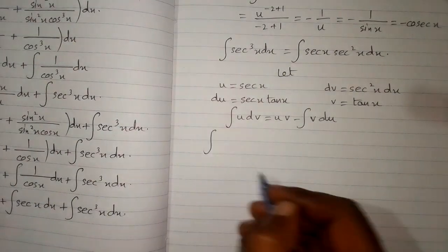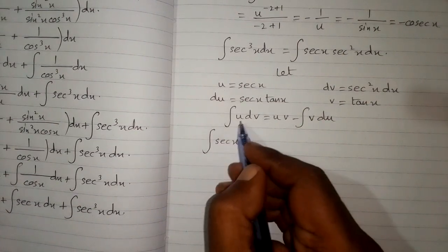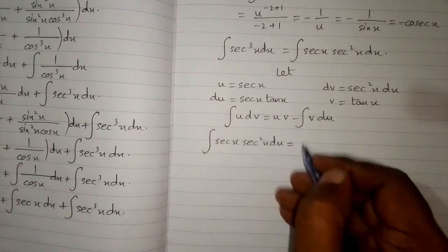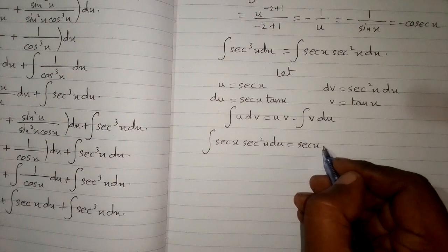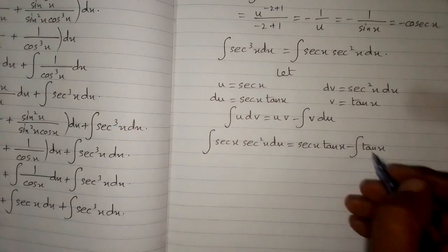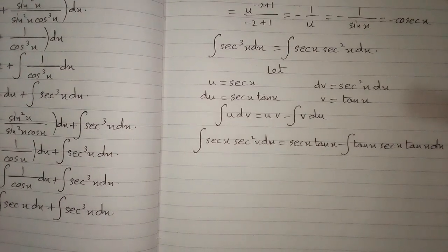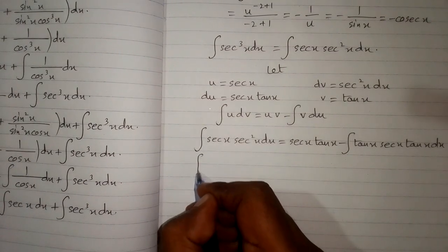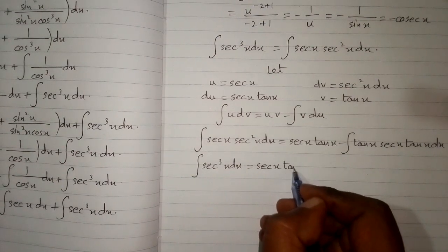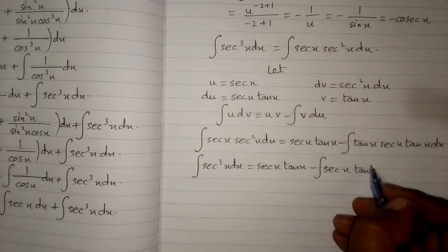Here v is tan x, u is sec x, and dv is sec squared x dx. Applying the integration by parts formula, we have sec x in place of u and sec squared x dx in place of dv, giving u times v equals sec x times tan x minus the integral of v du, where v is tan x and du is sec x tan x dx. This gives the integral of sec cubed x dx equals sec x tan x minus the integral of sec x tan squared x dx.